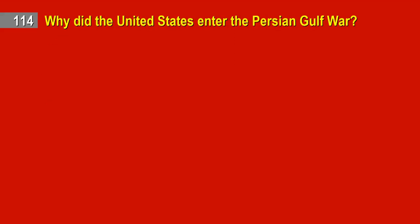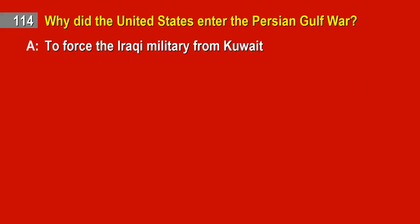Question 114. Why did the United States enter the Persian Gulf War? Answer: To force the Iraqi military from Kuwait.